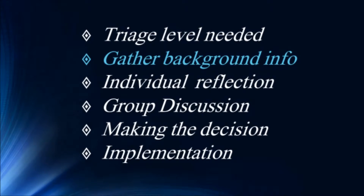The second component of group discernment is gathering information. Good decisions require good information, but there's a limit to how much information is useful. Based on the triage, the group will have a good idea of how much and what kind of information it will need to gather. This information could include history, statistics, perceptions and opinions of stakeholders, and the alternatives available.